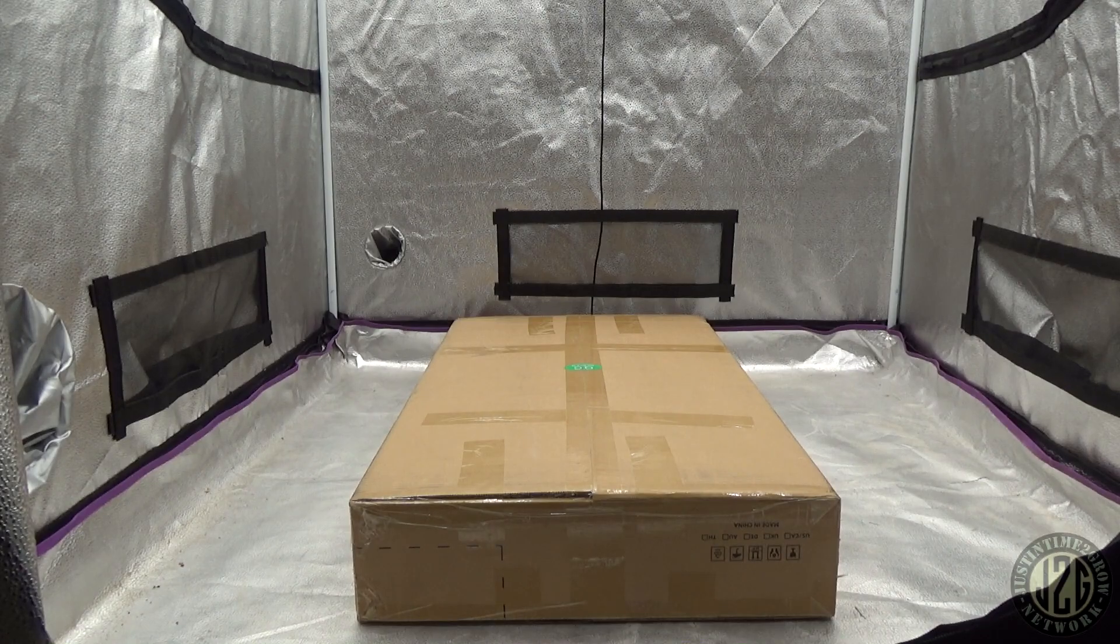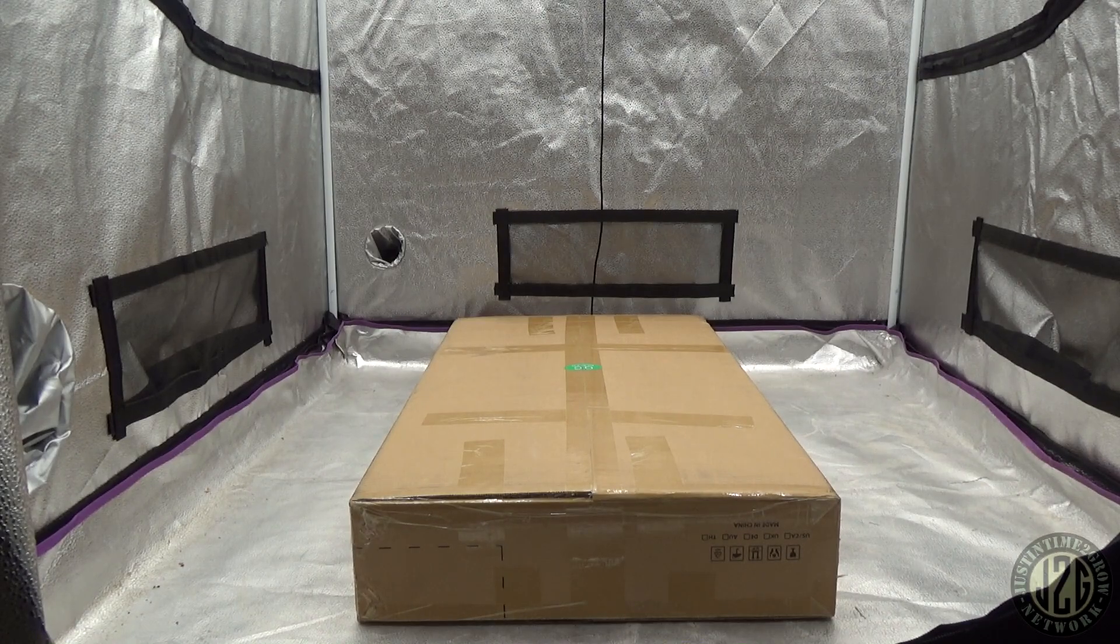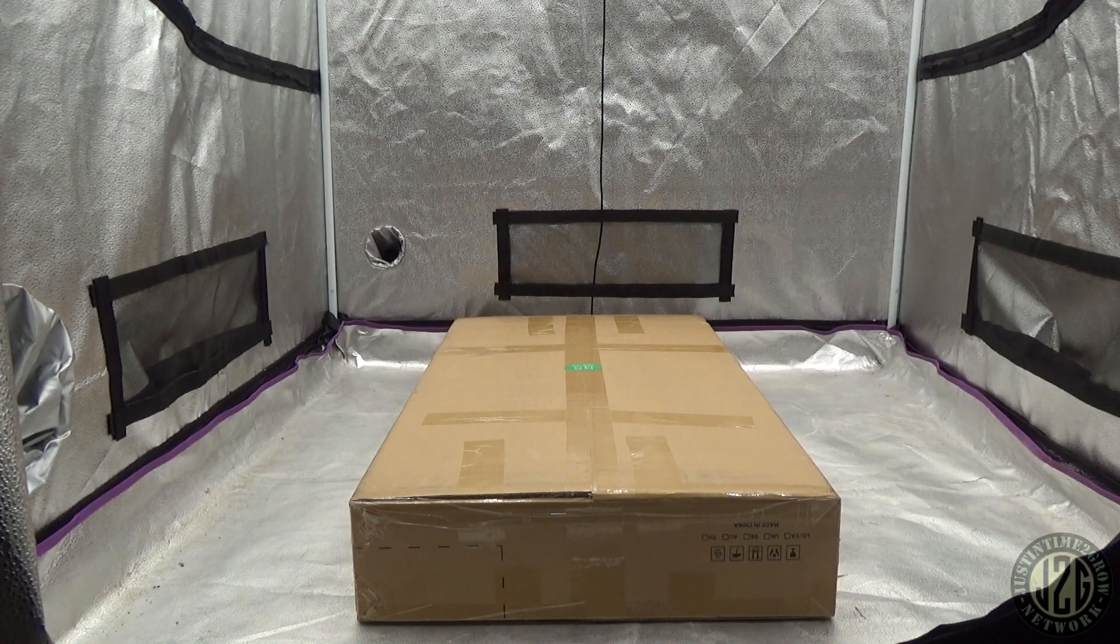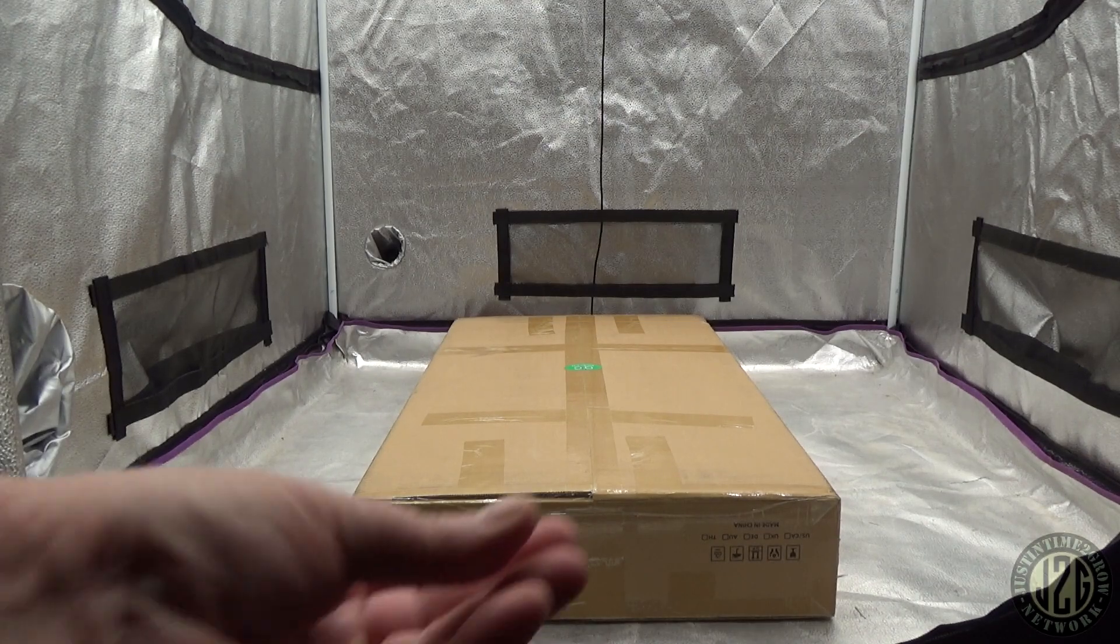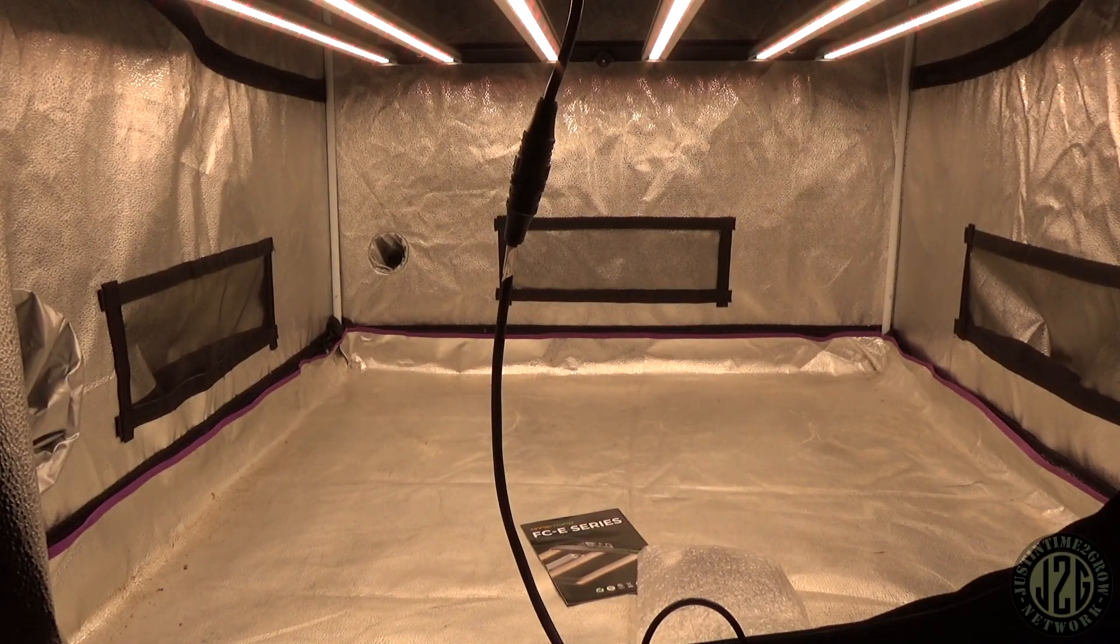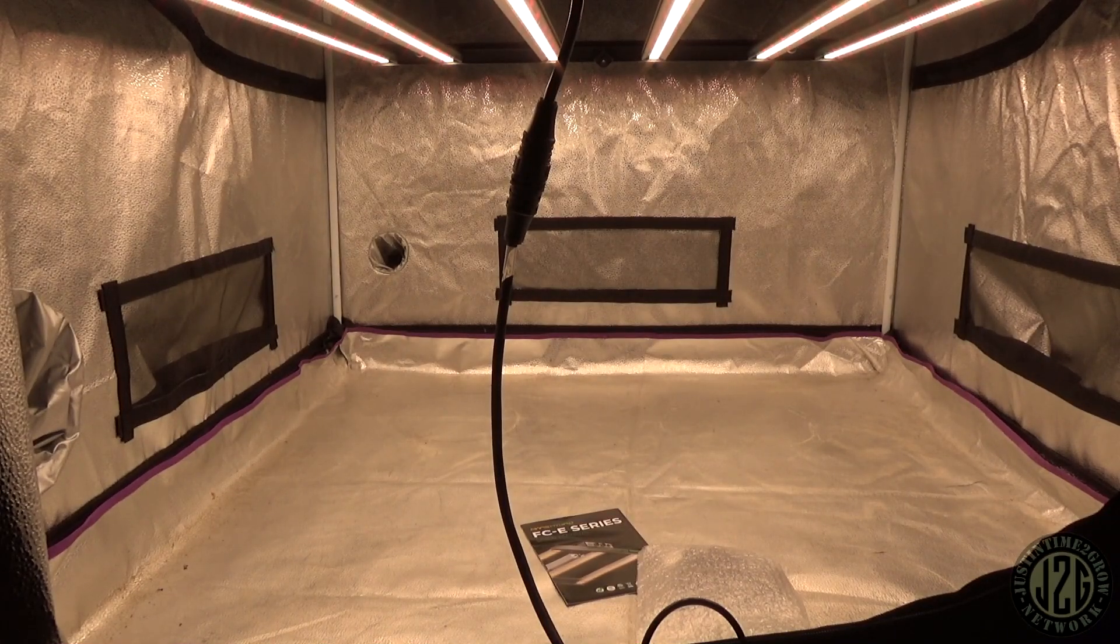Right now we're going to get into this light which is from Mars Hydro. It is the FCE 4800. Let's get into it. Alright, there we are, got it all hooked up and ready to go, nice little six bar light there.